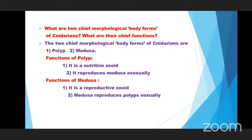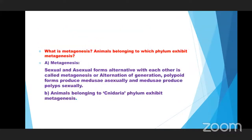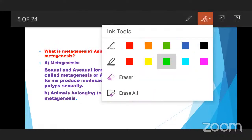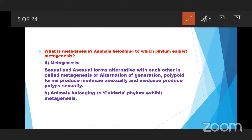Third question: What is metagenesis? Metagenesis means sexual and asexual forms alternating with each other is called metagenesis. Two types of alternate forms are produced from an organism — that type of process is called metagenesis, also called alternation of generations.